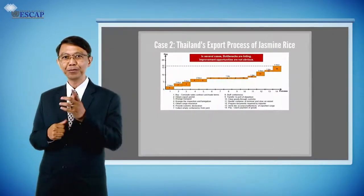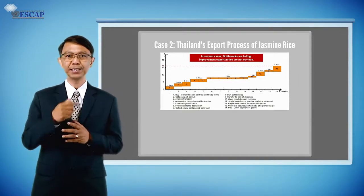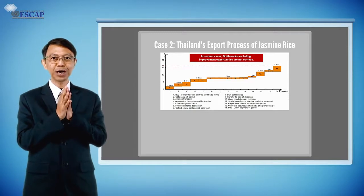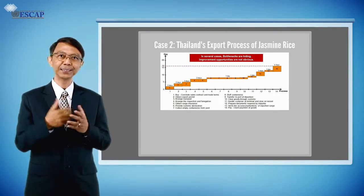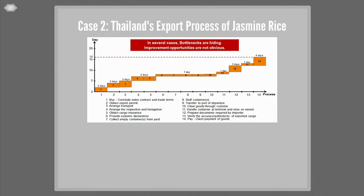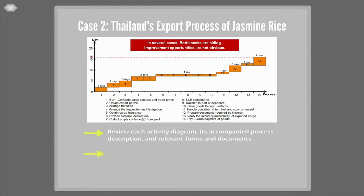For example, from the BPA study of the rice export process, we may examine the time procedure chart and notice that bottlenecks are hiding and improvement opportunities are not quite obvious. It is therefore important that process analysts go over each and every activity diagram, process descriptions, review laws, rules and regulations, and interviewing notes from different angles. We may need to review each activity diagram, its process descriptions, relevant forms and documents, and look for redundancies and any non-value-added activities in the procedural and documentary requirements.